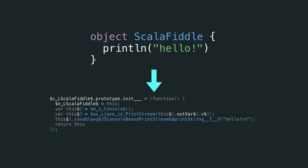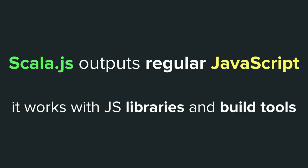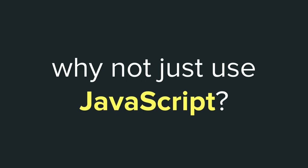The important part is Scala.js outputs regular JavaScript — not some special flavor or custom Scala VM implementation. It's just regular JavaScript, which means it works perfectly with JavaScript libraries and tools. That's what really enables us to use React.js from Scala applications.